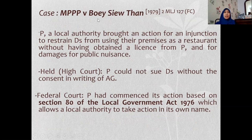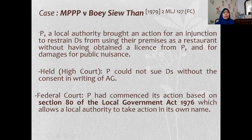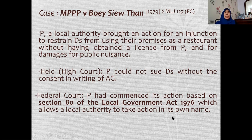The case of MPPP (Majlis Perbandaran Pulau Pinang) v Boi Siu Tan is a Federal Court decision. The local authority MPPP brought an action for an injunction to restrain the defendants from using their premises as a restaurant without a license, and also sued for damages for public nuisance. The High Court said MPPP could not sue without the written consent of the AG, but the Federal Court held that the plaintiff had commenced the action based on Section 80 of the Local Government Act, which allows local authorities to take action in their own name without requiring the AG to initiate the action.